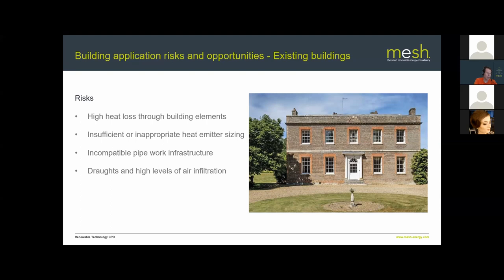Air infiltration is a big source of heat loss — 'build tight, ventilate right' as the saying goes. Excessive ventilation, especially without an MVHR system — which is unlikely to be a good investment for an older property — means you need to focus on drafts and leakage. Finally, allow sufficient plant room space: a heat pump with a buffer cylinder and large domestic hot water cylinder can take up a fair amount of room.